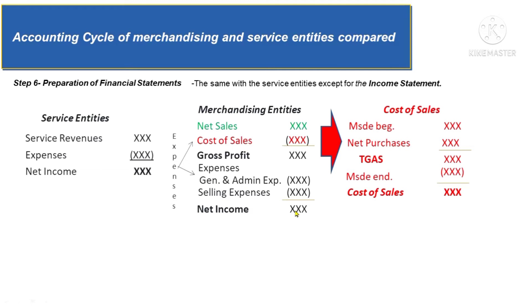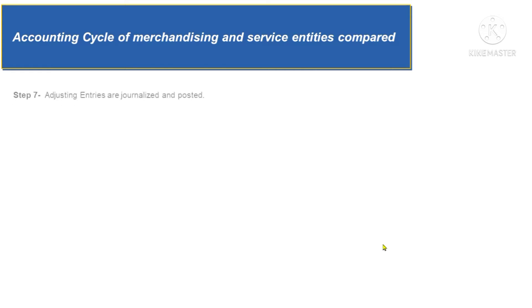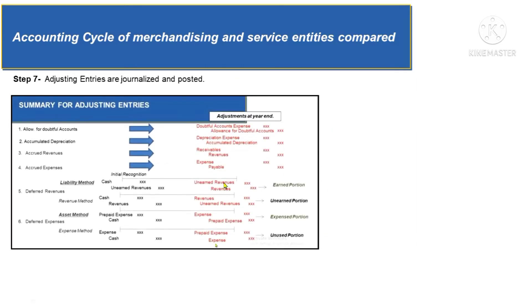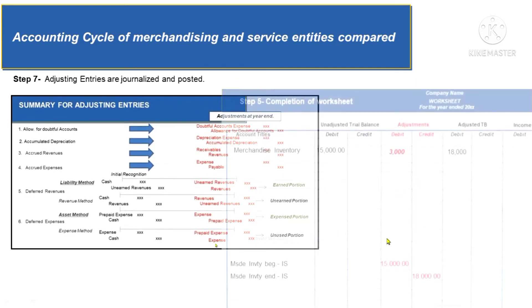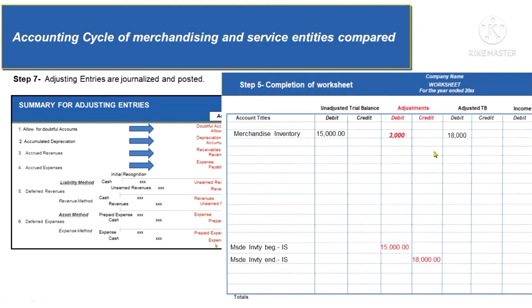On steps 7 to 10 of the accounting cycle, service and merchandising entities follow the same concepts, but I will still elaborate, especially on closing entries. Step 7 is the journalizing of the adjustments, plus the additional inventory adjustment for entities following the periodic inventory system. After journalizing, these should be posted to the general ledger or T-accounts so that the ledger balances coincide with the adjusted trial balance.